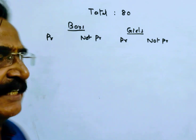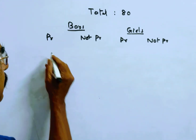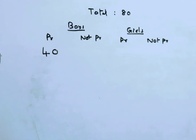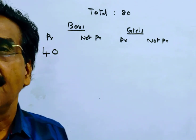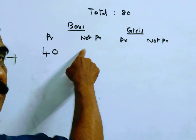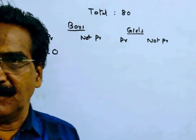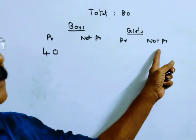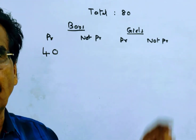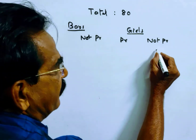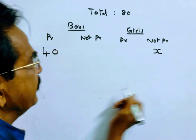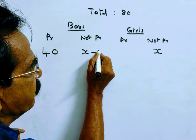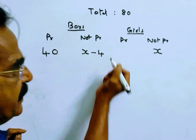Friends, it is given that 40 boys are present. The number of boys not present is 4 less than the number of girls not present. So say the number of girls not present is X, then the number of boys not present will be X minus 4.